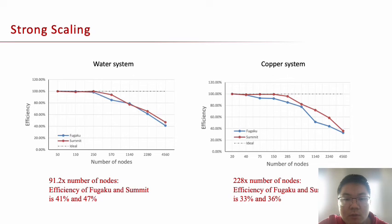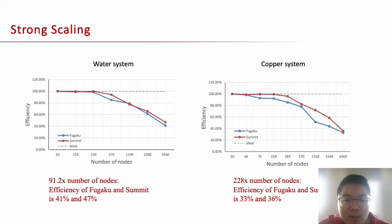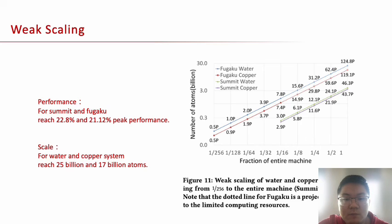We also tested strong scaling of the water and copper systems on Fugaku and Summit. For the water system, when the number of nodes is expanded 91.2 times, the parallel efficiency of Fugaku and Summit are 41% and 47% respectively. For the copper system, when expanded 228 times, the parallel efficiency of Fugaku and Summit are 99% and 96% respectively. For weak scaling performance, we reach 22.8% and 21.12% of peak performance on Summit and Fugaku. In terms of scale, we can reach 25 billion atoms and 17 billion atoms for the water and copper systems respectively.